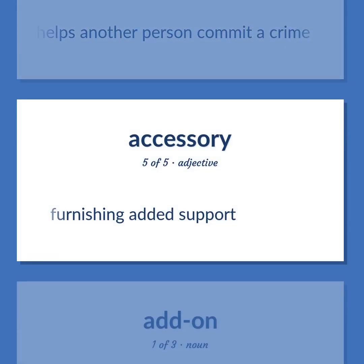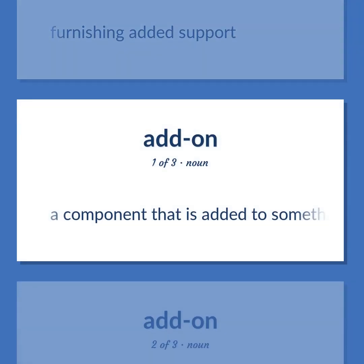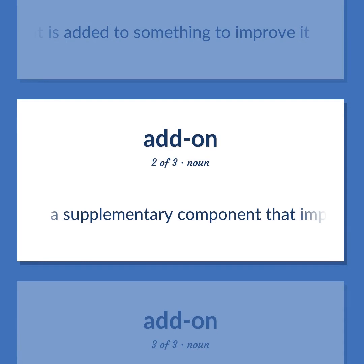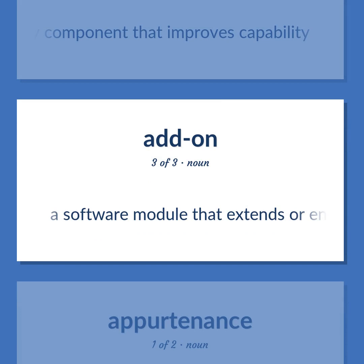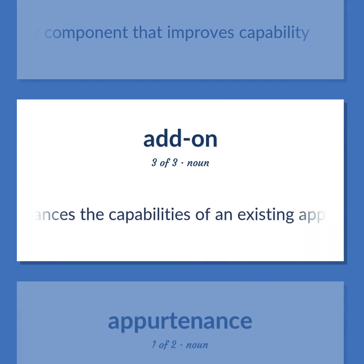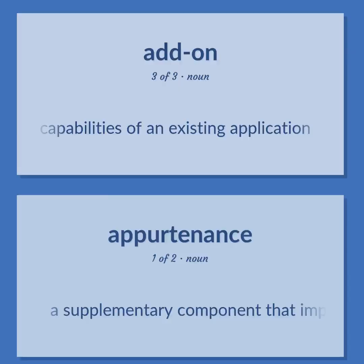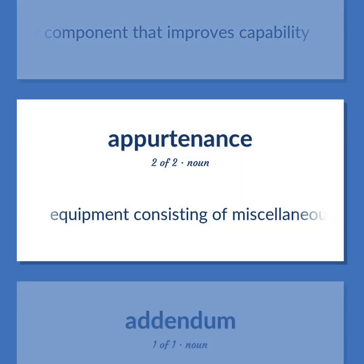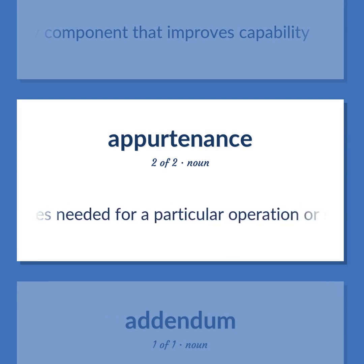Furnishing added support. A component that is added to something to improve it. A supplementary component that improves capability. A software module that extends or enhances the capabilities of an existing application. Equipment consisting of miscellaneous articles needed for a particular operation or sport.